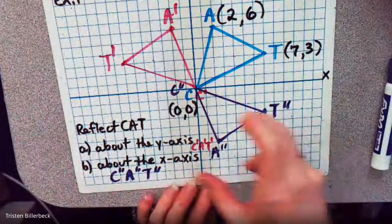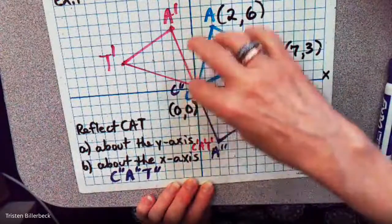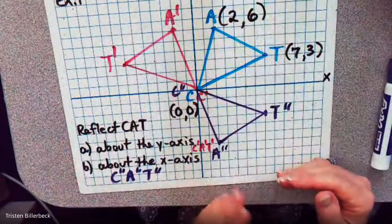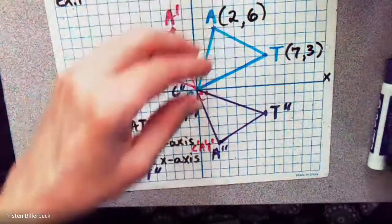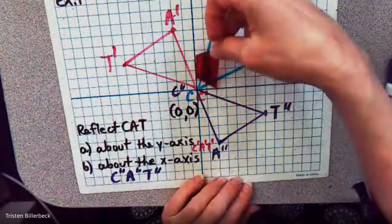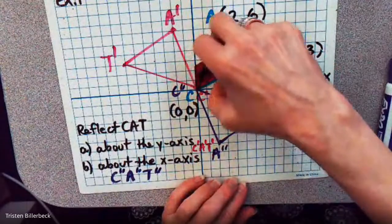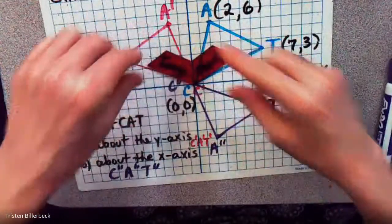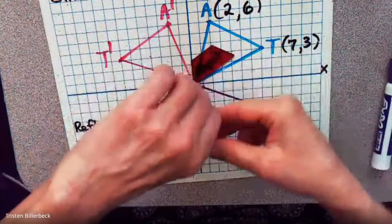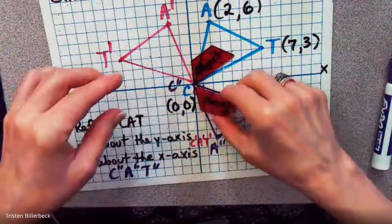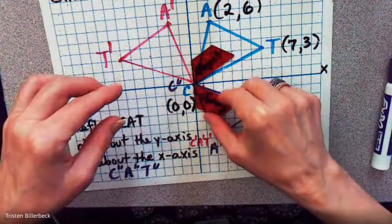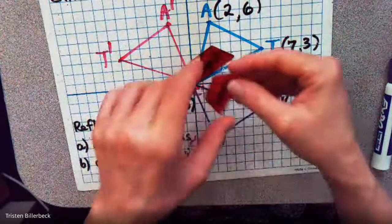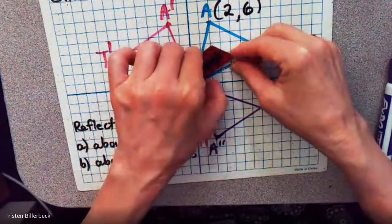If we move these triangles around, they would lie right on top of each other — or if you reflected them back, they'd lie right back on top of each other. So the image and object are the same; they're just a different orientation.